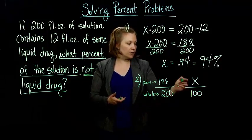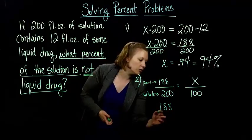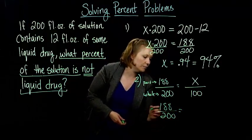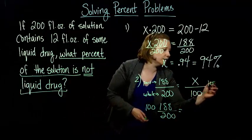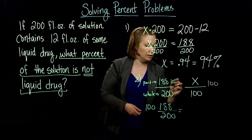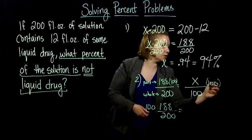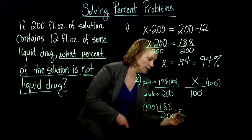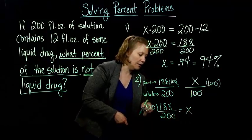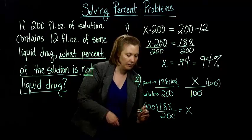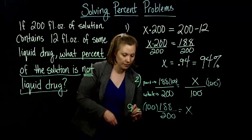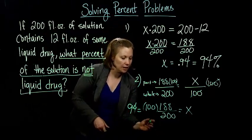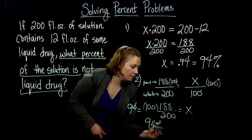So now all we have to do is solve this for x. We get 188 over 200 equals, multiply both sides by 100. So multiply on both sides by 100, so the 100s cancel out over here. And so we end up with x equals all this. And when we simplify all of it, we get 94. So it's 94%, just like we had solving it with equations.